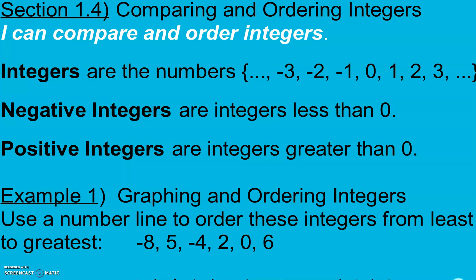Section 1.4 is comparing and ordering integers. I can compare and order integers. Integers are numbers like negative 3, negative 2, negative 1, 0, 1, 2, and 3. They don't have any decimals or fractions — just the whole number part, plus 0, plus the opposites, which are the negative whole numbers. Negative integers are integers less than 0, and positive integers are integers greater than 0.